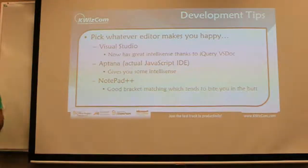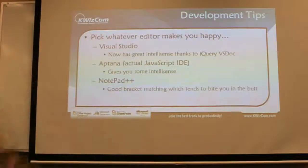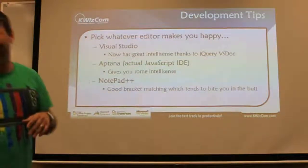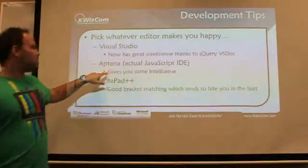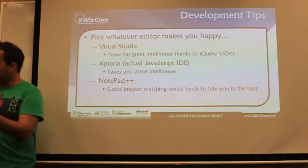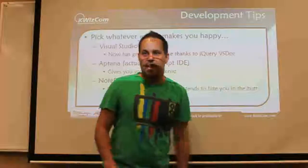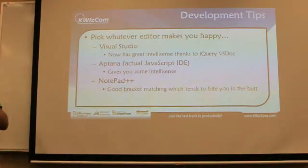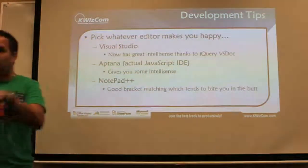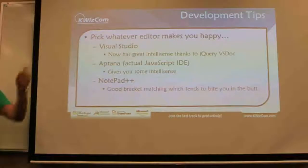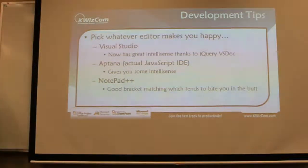My recommendation when you're developing with jQuery is use whatever tool you are comfortable with. Some people love Visual Studio, some people don't like SharePoint Designer. One thing I recommend is Aptana — it's a full JavaScript IDE with great IntelliSense. But Visual Studio also has great IntelliSense because jQuery has released something called VSDoc, which does autocomplete IntelliSense inside Visual Studio for jQuery. As you type jQuery commands, it gives you a list of autocomplete information. Has everybody heard of VSDoc for jQuery? Write that down — that's important.